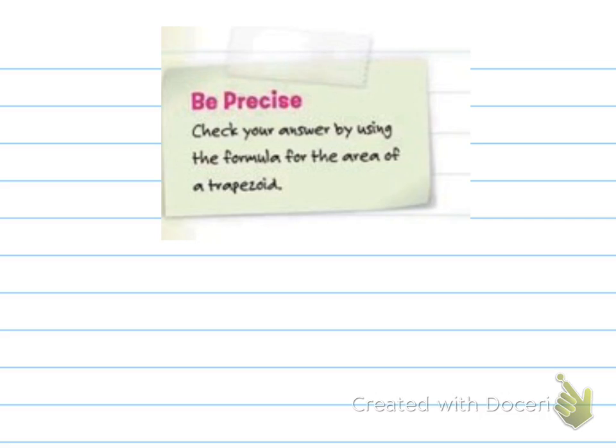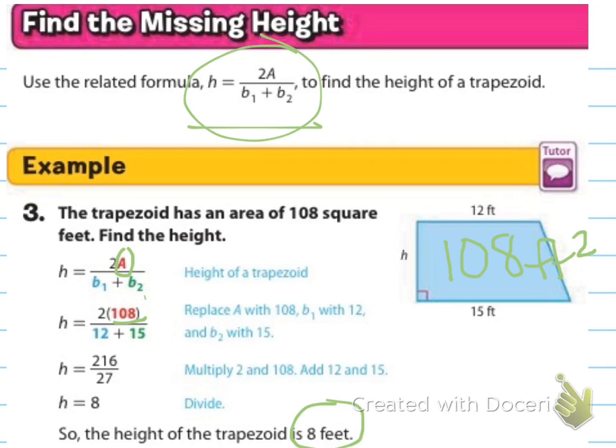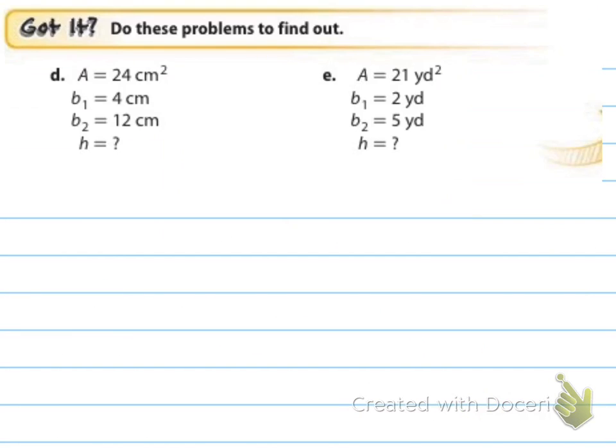It says that you can check your answer by using the formula. So, if you wanted to check your answer for this, we could use the area formula 1 half times the height times B1 and B2, and we can check to see if we got it right. So, we would do 1 half of 8, which is 4, times 12 plus 15, which is 27. So, we do 4 times 27, and we get the 108 square feet, and we would check our work that way. Just an opportunity for you to check your work.